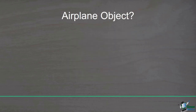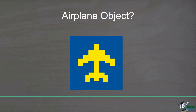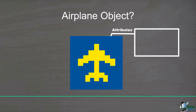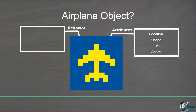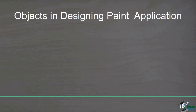For example, if you think of the airplane, you'll find that it has some attributes such as location, shape, fuel, or a score. Also, the airplane has some behavior — at least it can move right, it can move left, it can shoot the enemies, and it can refuel. As a more abstract example, suppose that you want to develop an application like Paint in Windows.